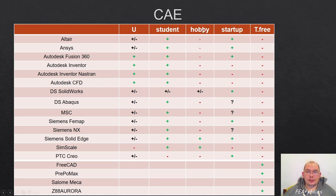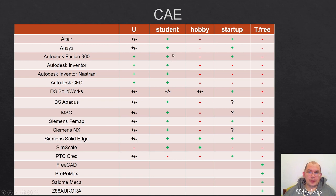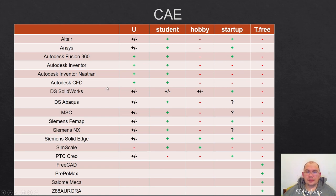Autodesk Fusion has a CAE environment for students and universities, but not for hobbyists — the hobby license does not give access to CAE tools. Autodesk Inventor and Autodesk CFD also have possibilities for universities and students but do not have hobby or startup plans.